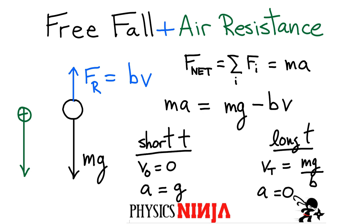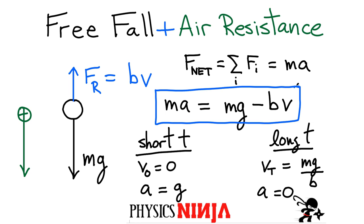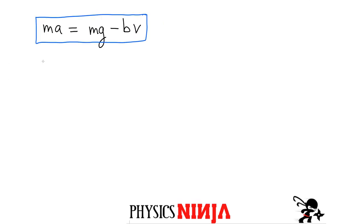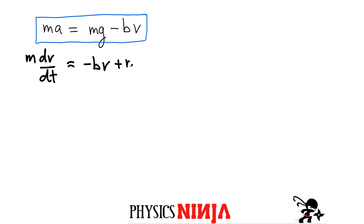These are the two limiting cases our final equation has to satisfy in order to make sense with the physics. Now let's use a little bit of calculus to solve this equation. We start by rewriting the left-hand side: m times the acceleration written as dv/dt equals minus Bv plus mg.